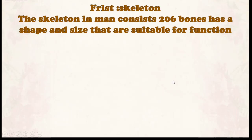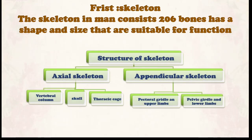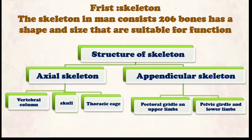The skeleton in humans consists of 206 bones, each with a shape and size suited to its function. The skeletal system is divided into two parts: the axial skeleton and the appendicular skeleton. The axial skeleton consists of three parts: the vertebral column, the skull, and the thoracic cavity or chest cavity. The appendicular skeleton consists of the pectoral girdle and upper limbs, and the pelvic girdle and lower limbs.